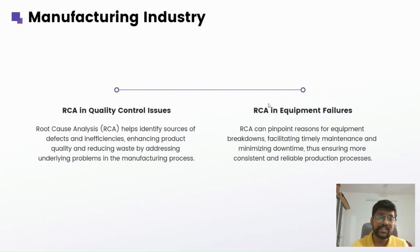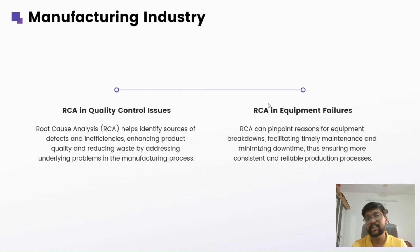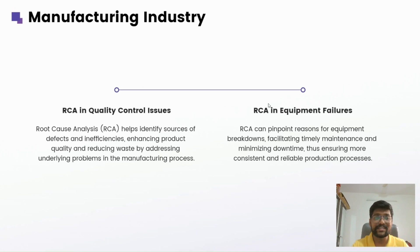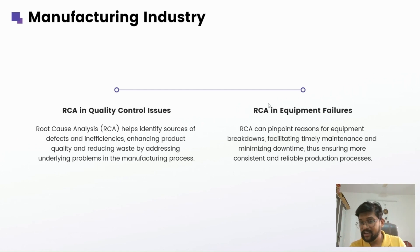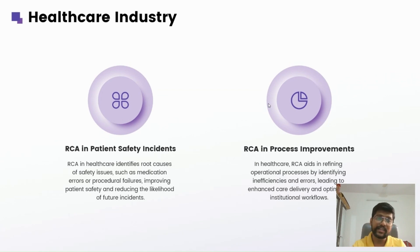Now let's look at some industry-specific RCA examples. First is manufacturing. In IT, you are often dealing with manufacturing industry customers and healthcare industry customers, so the problems are similar. For quality control RCA in manufacturing, root cause analysis helps identify the sources of defects and inefficiencies, enhancing product quality and reducing waste by addressing underlying problems in the manufacturing process. Equipment failure is one common issue requiring RCA.